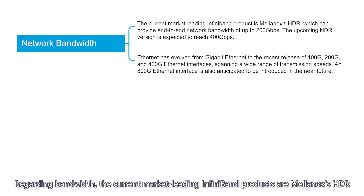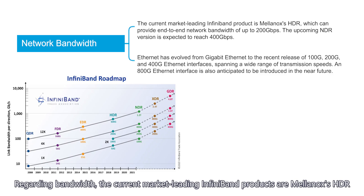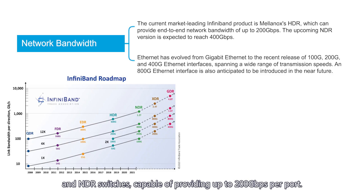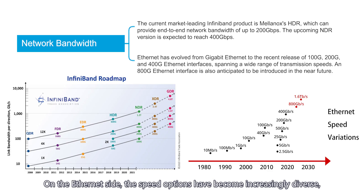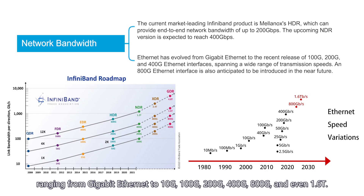Regarding bandwidth, the current market-leading InfiniBand products are Mellanox's HDR and NDR switches, capable of providing up to 200 Gbps per port. On the Ethernet side, the speed options have become increasingly diverse, ranging from Gigabit Ethernet to 10G, 100G, 200G, 400G, 800G, and even 1.6T.